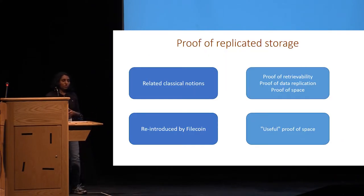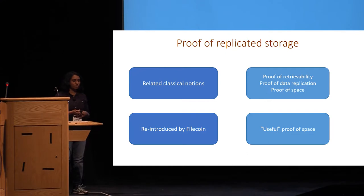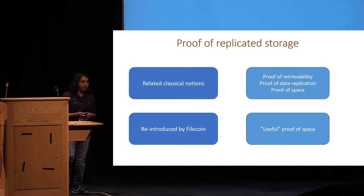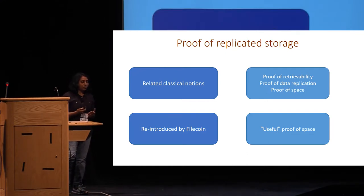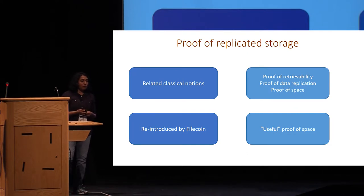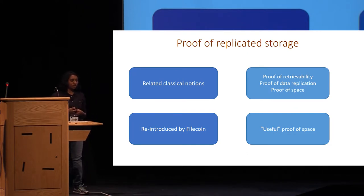What we need is a way for the client to make sure that there is indeed replicated storage and unique spaces dedicated to store each copy of the file. This notion of proof of replicated storage is related to classical notions of proof of storage and also to a notion of proof of replication introduced by the cryptocurrency Filecoin, which gives a method to give a useful proof of space.